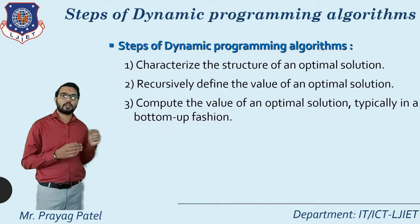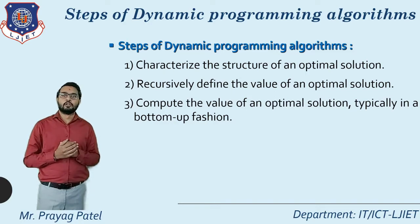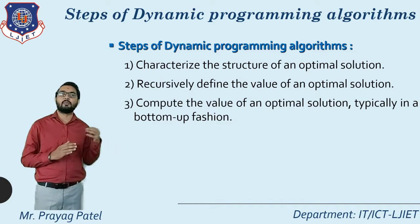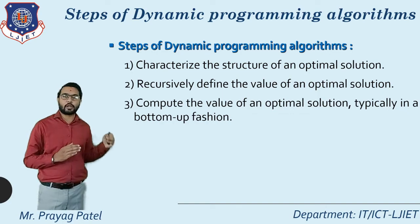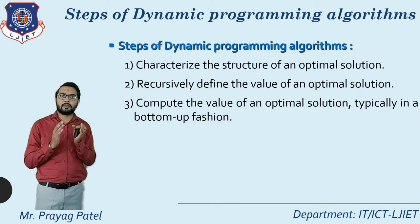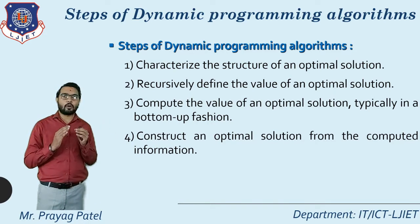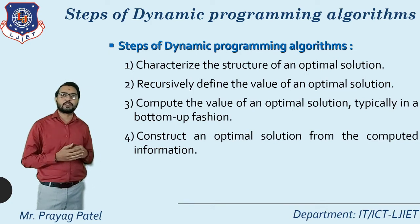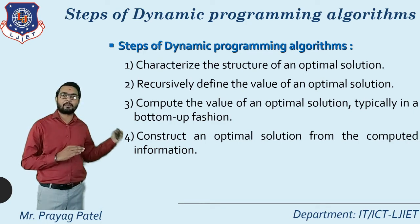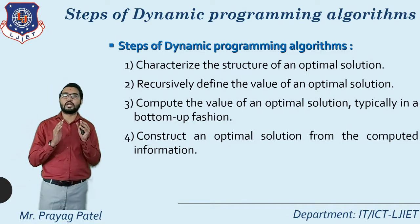Step 3: compute the value of an optimal solution, typically using a bottom-up approach. After completing the table, apply backtracking from the last block to extract computed information. Step 4: construct an optimal solution from the computed information obtained in step 3. Using steps 3 and 4 together, you find the final optimal solution. These four steps are used to solve any problem with the dynamic programming algorithm.